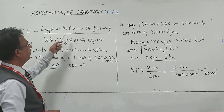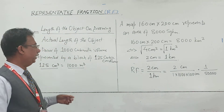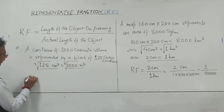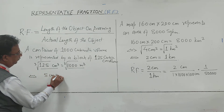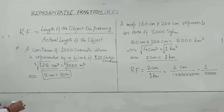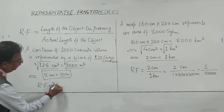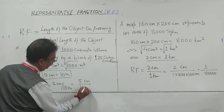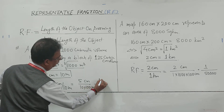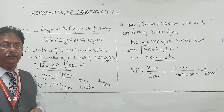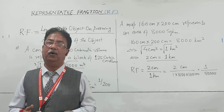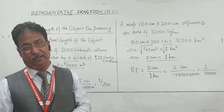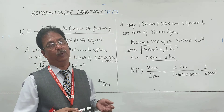Again, looking at the RF formula — RF equals length of object on drawing upon actual length of the object — we have to take the cube root on both sides of this equation. Taking cube root gives 5 centimeter equals 10 meter. Now using this in the formula, RF will be 5 centimeter divided by 10 meter, which equals 5 centimeter divided by 1000 centimeter, giving 1 upon 200. This is the way to find RF when the proportion is given in the form of area or volume. Don't put area or volume directly into the RF equation — that equation is for length, not area. You must first convert to length by square rooting or cube rooting.